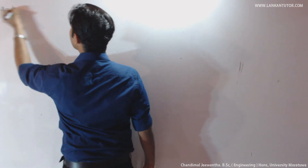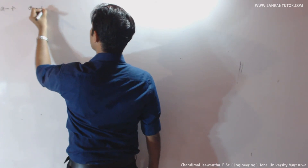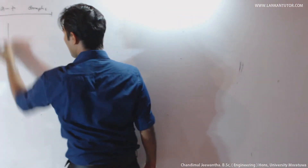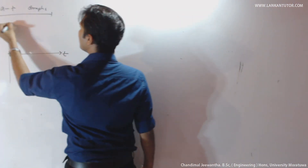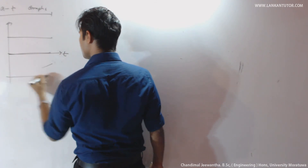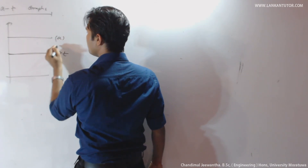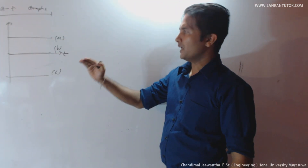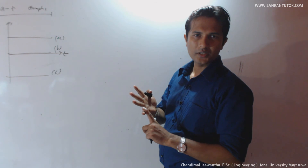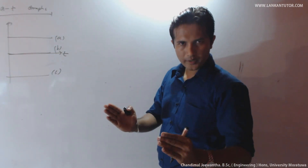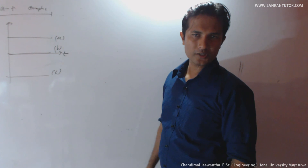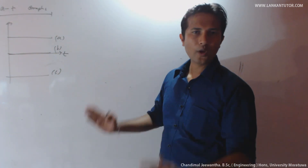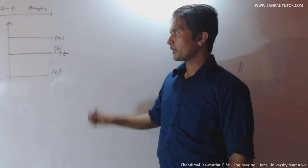Now we go to acceleration-time graphs, or AT graphs. There are three graphs under AT graphs. Simple A: uniform acceleration. Simple B: zero acceleration, which means the object is at rest or moves with uniform velocity. Simple C: object moves with negative acceleration.